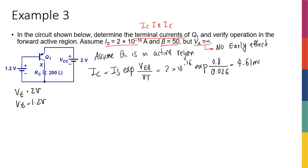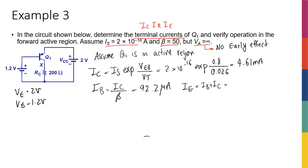Doing the math gives Ic equal to 4.61 milliamps. Since we're in the active region, all currents are related through beta. So Ib equals Ic divided by beta: 4.61 milliamps divided by 50 equals 92.2 microamps. For Ie, you can use beta-plus-one times Ib, or Ib plus Ic — either way you get approximately 4.7 milliamps. Now I have all the currents, but I still need the terminal voltages to verify the active region.